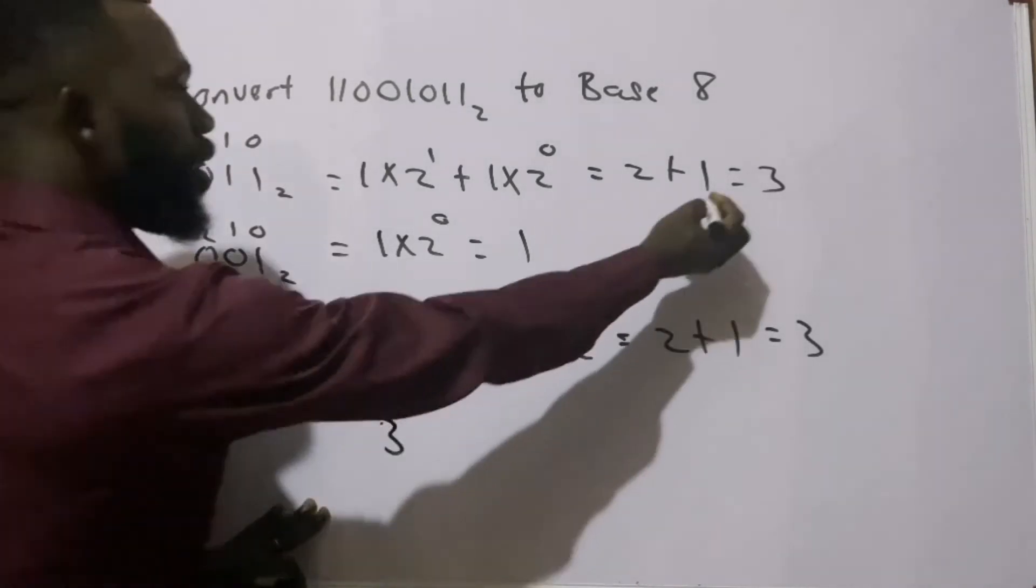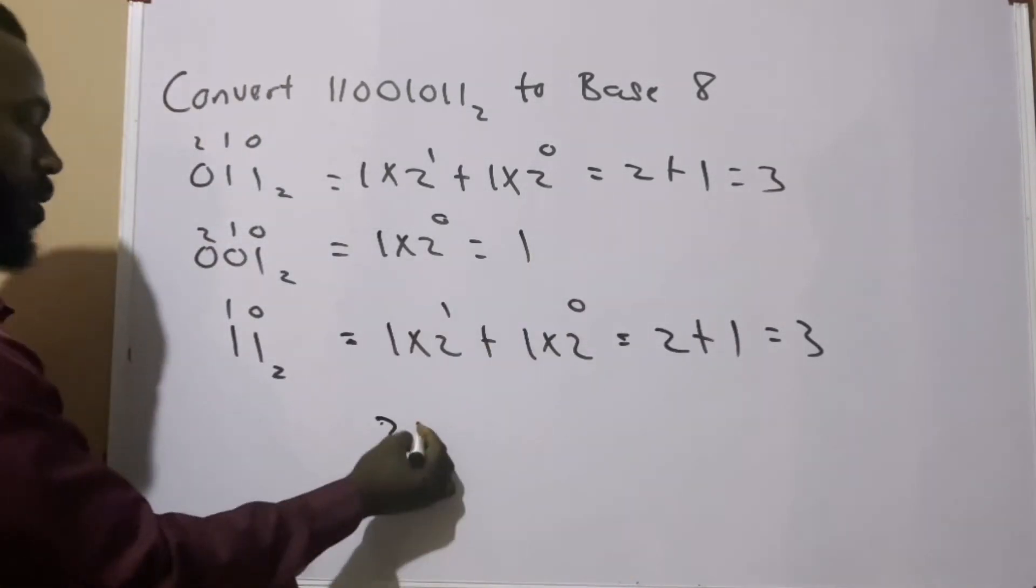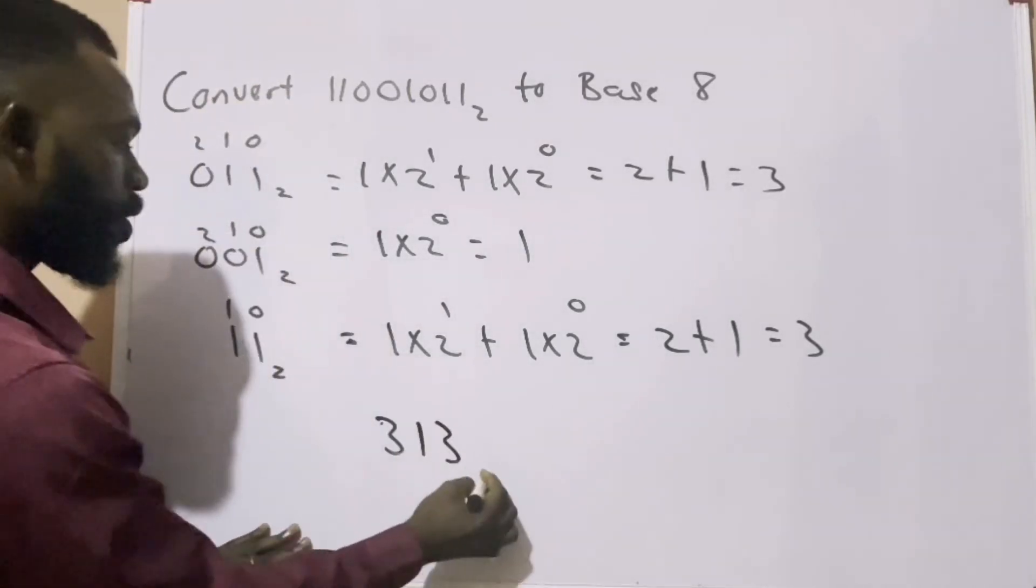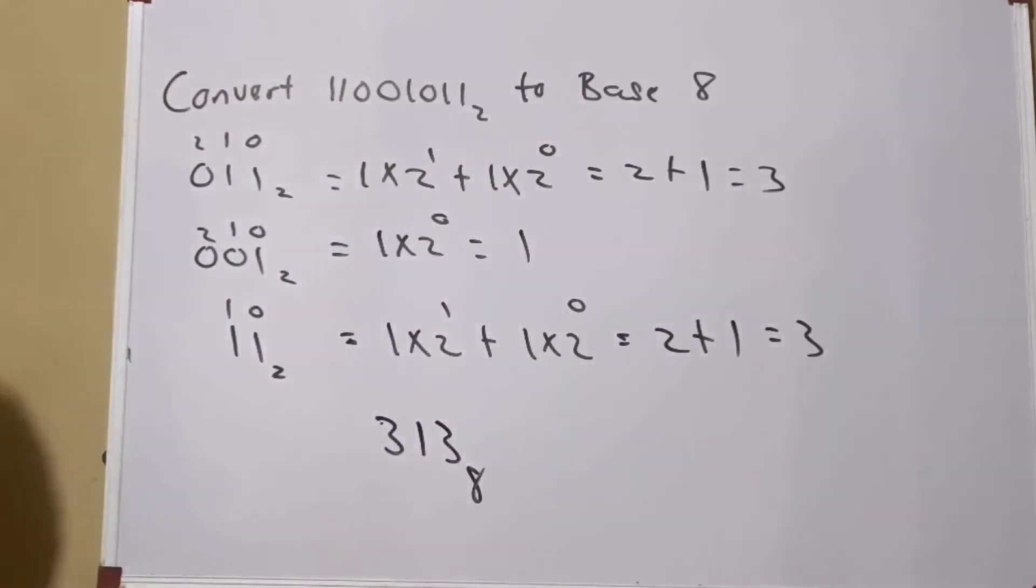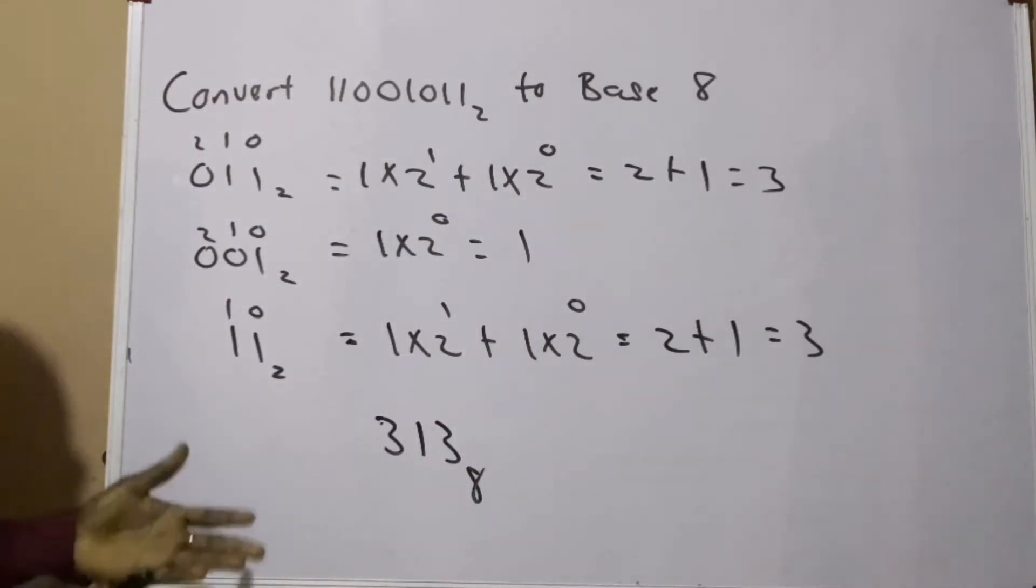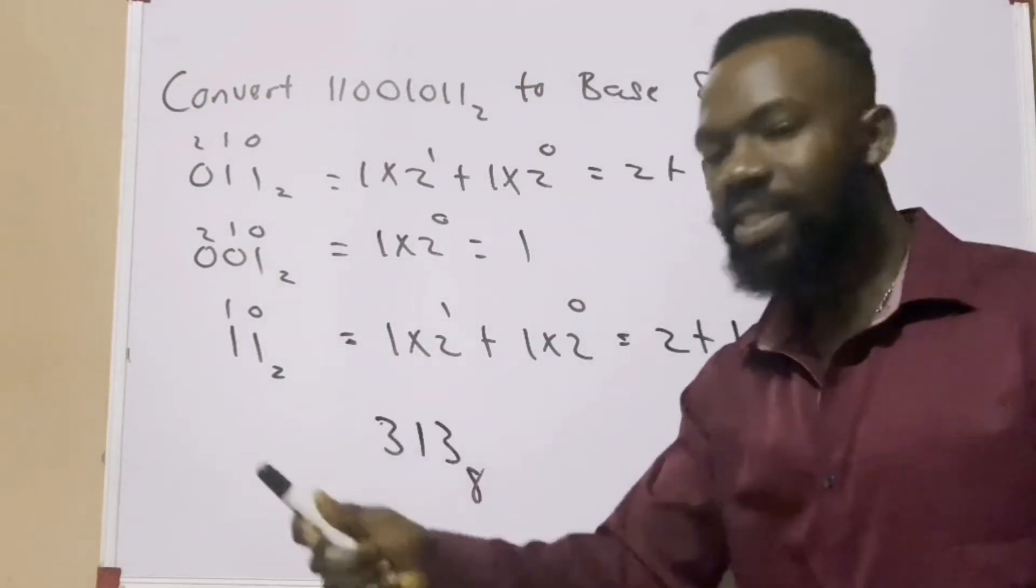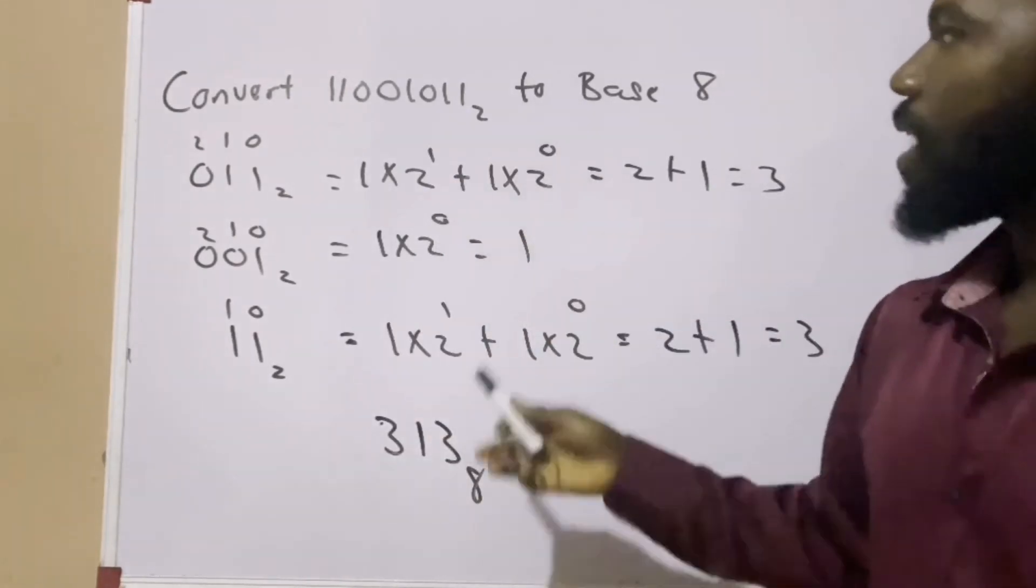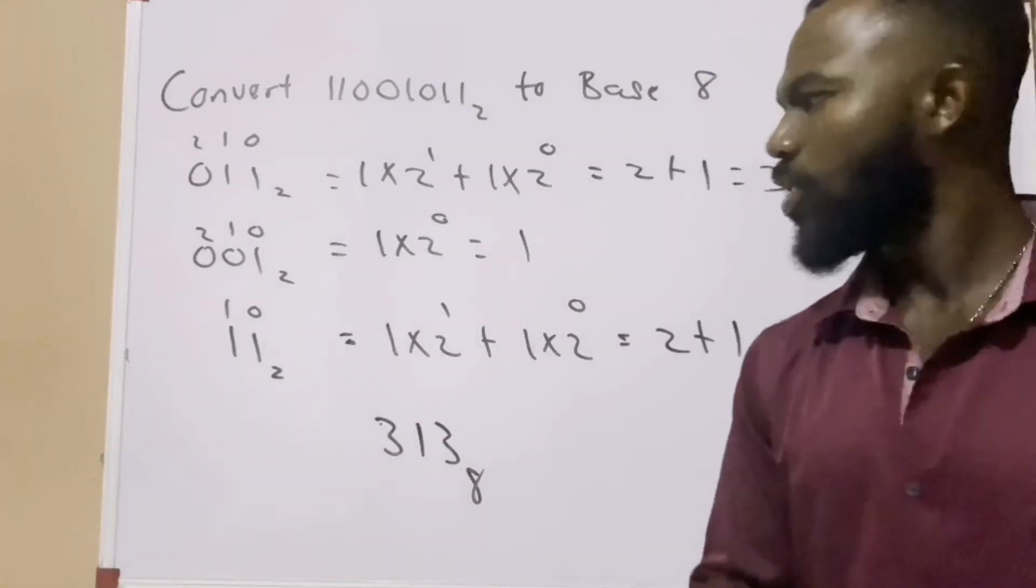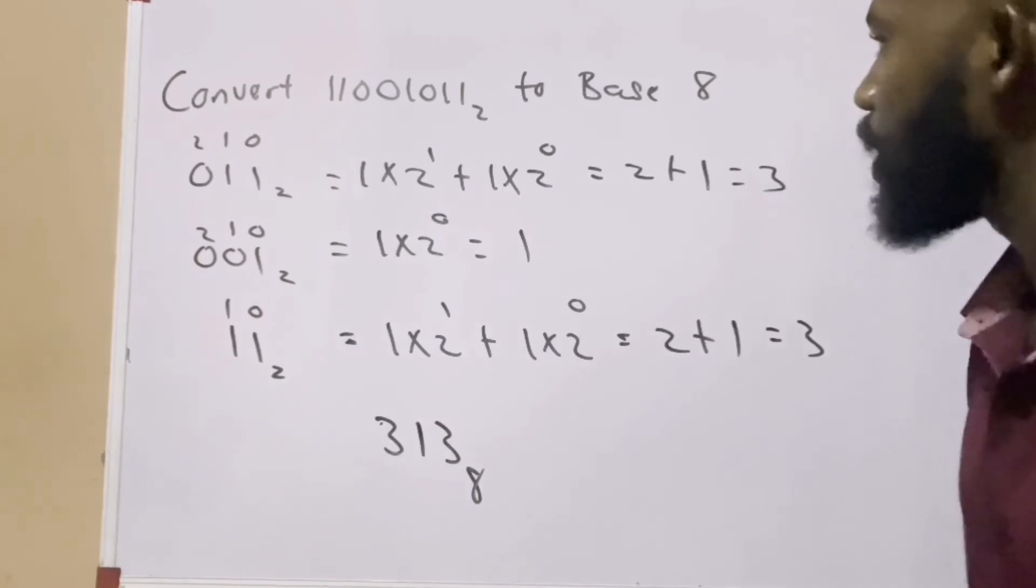So our answer to this question is 313 to the base 8. This is how you can solve it: first split into 3 and then convert. Your final answer comes base 8 instead of going to base 10 and then converting back to base 8.